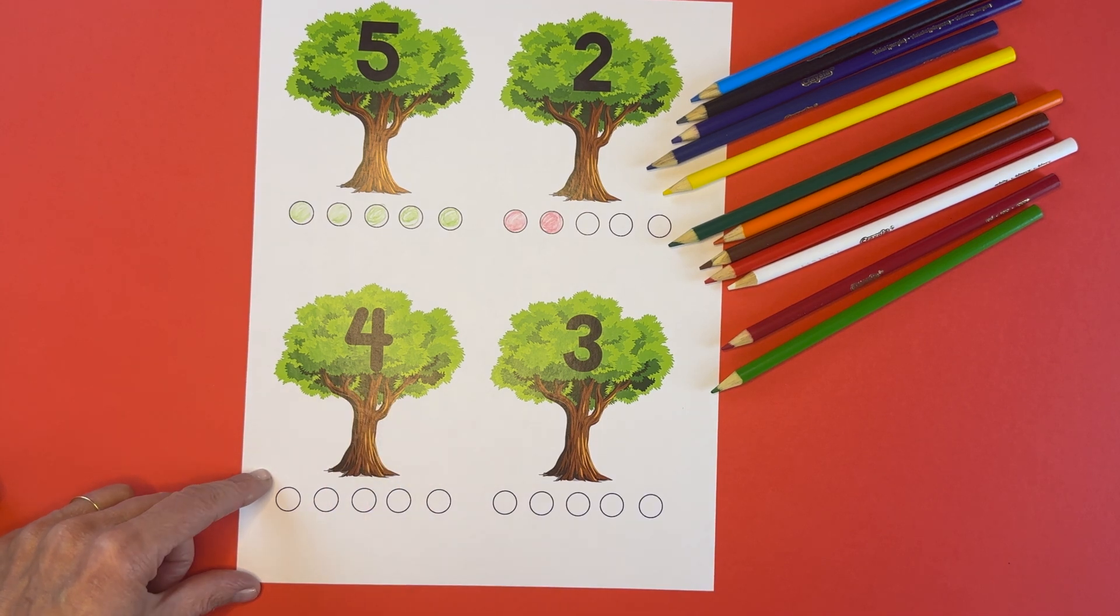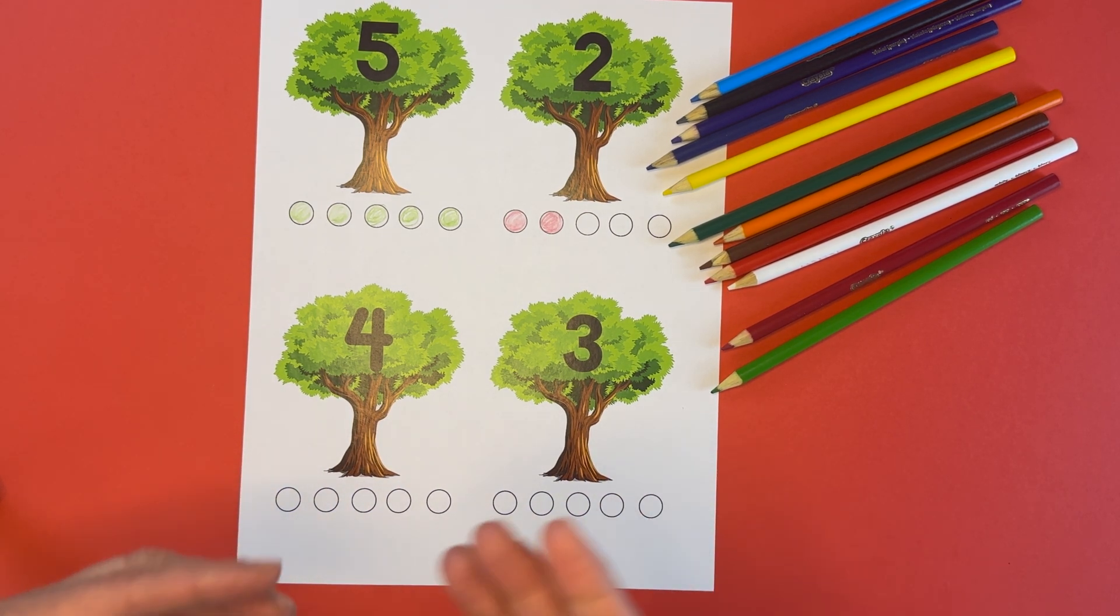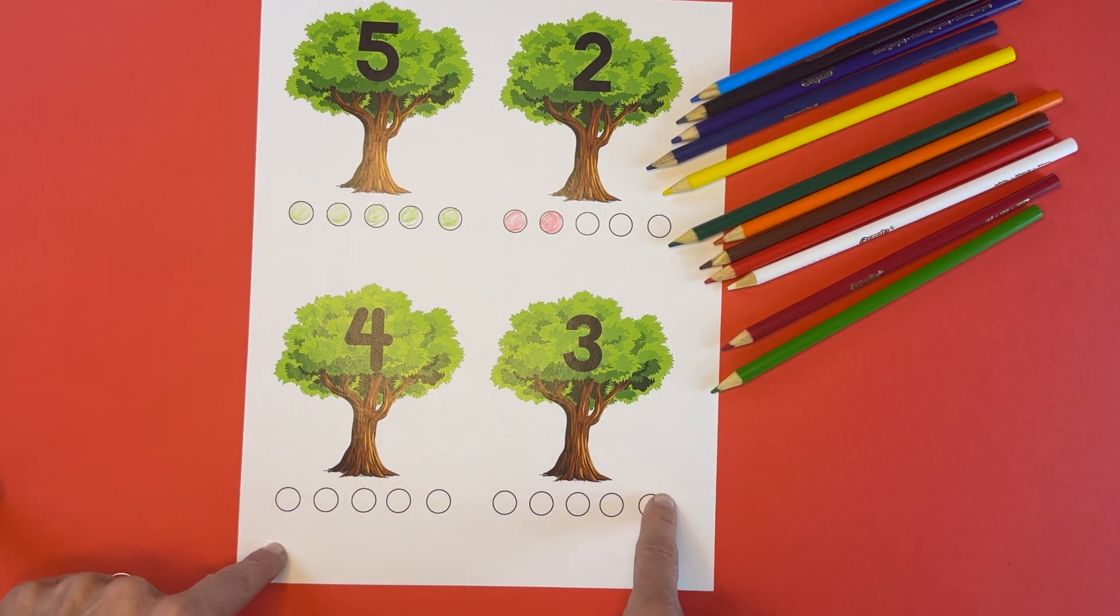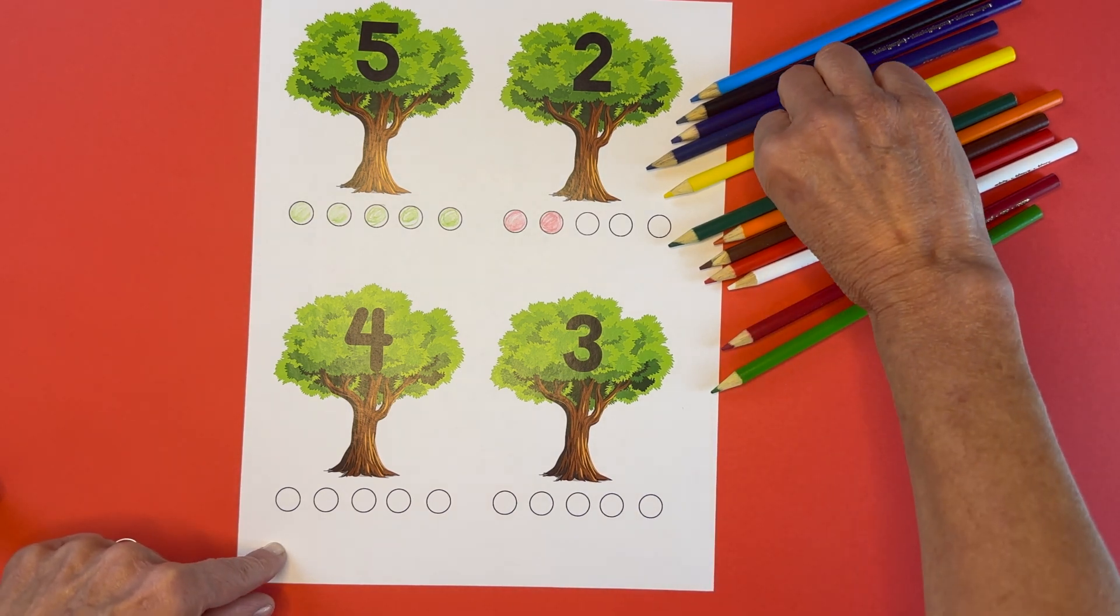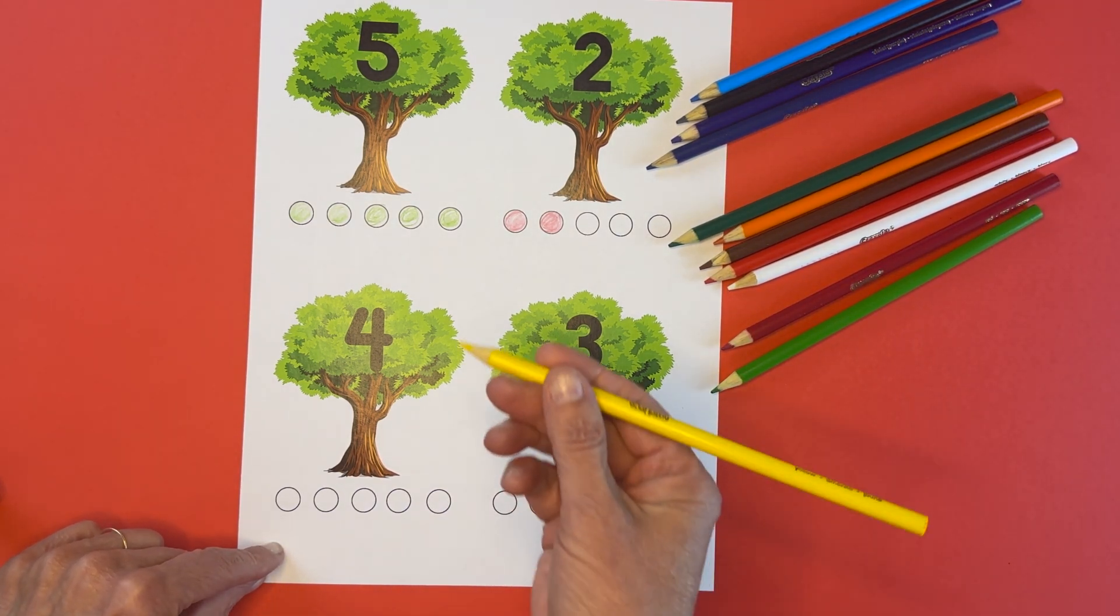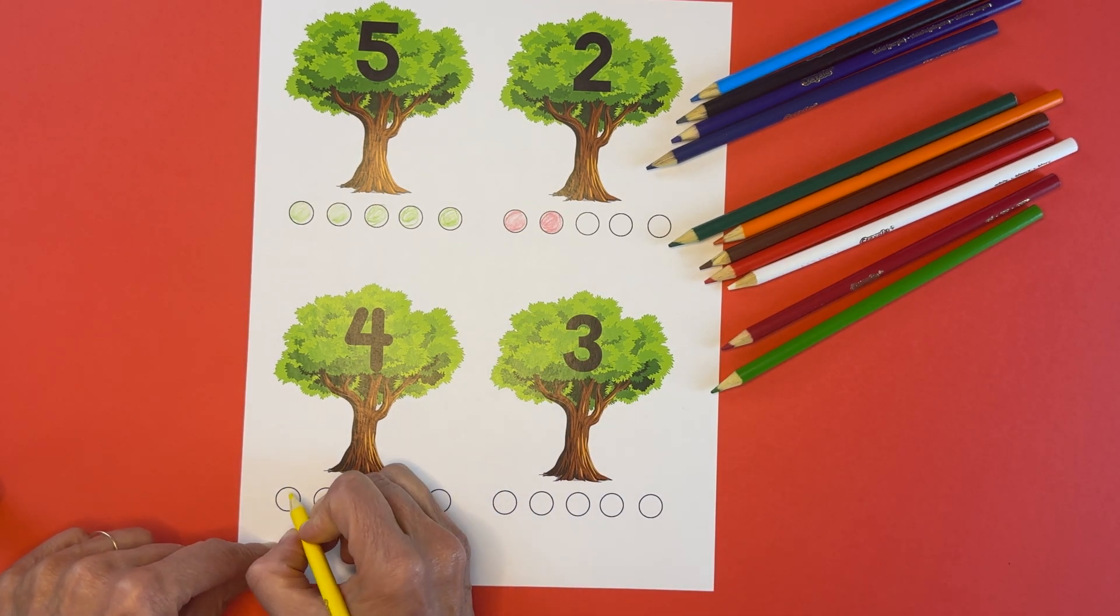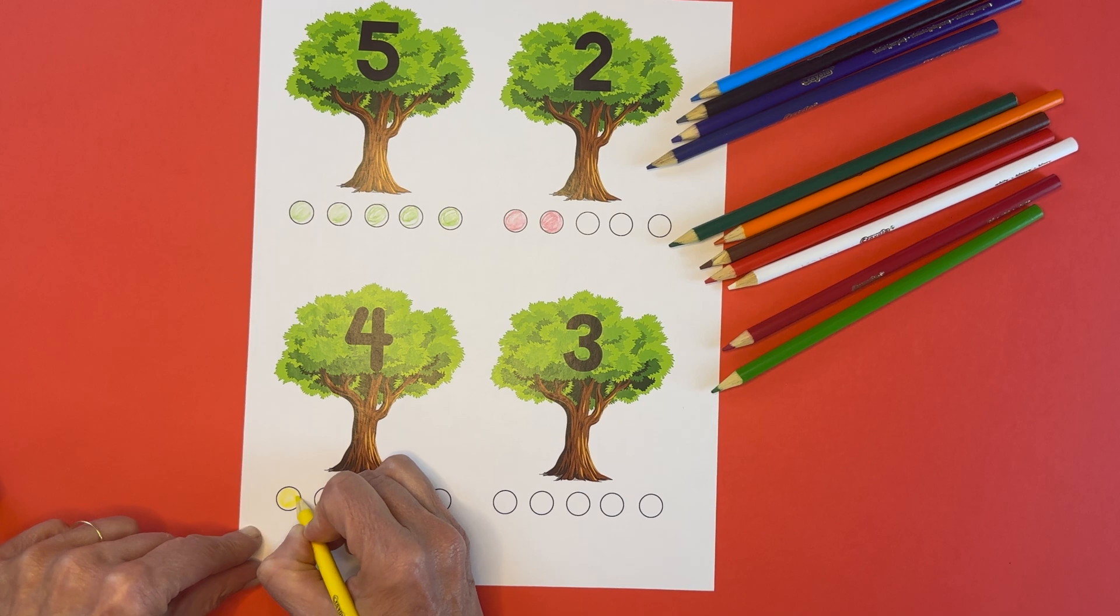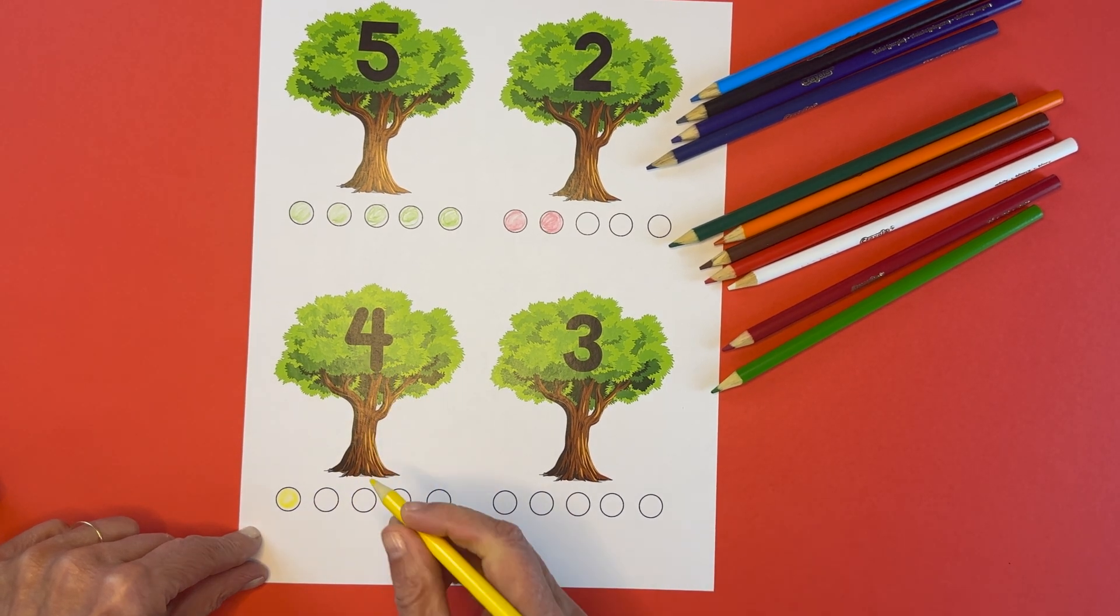Number four down here. And you know, if you were doing this at home, you could choose any color you wanted to represent these apples down here. It does not have to be an apple color. I just think it's fun to do it that way. So here I'm choosing a yellow one.